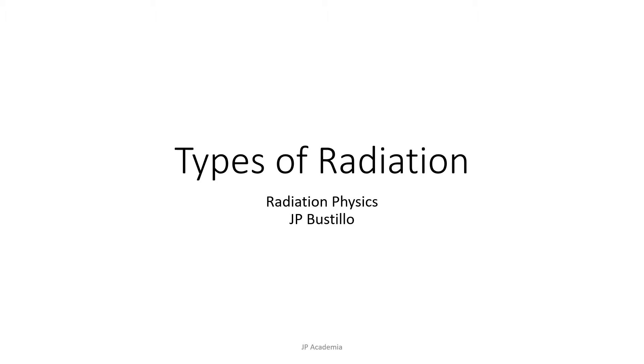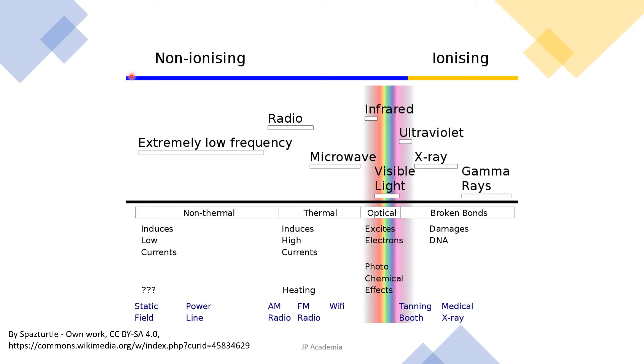In this lecture, I will introduce the different types of radiation. Let's start. Let us start with this illustration. Radiation is classified into two. We have the non-ionizing radiation and the ionizing radiation.